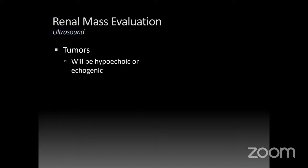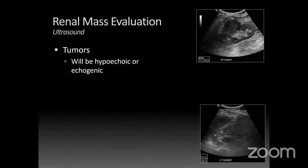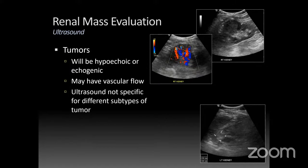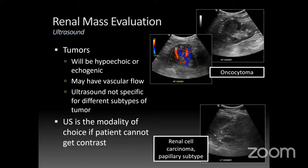For renal tumors, they can be hypoechoic or echogenic. Here's an exophytic hypoechoic mass, and here's an echogenic lesion at the upper pole. You can't really differentiate these — they might have vascular flow, but ultrasound isn't specific for different subtypes of tumor with conventional ultrasound. One turned out to be an oncocytoma and the other a papillary renal cell carcinoma. But ultrasound is a great option if the patient cannot get contrast.